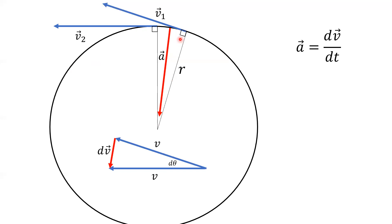For an object in circular motion, the velocity vector is always changing direction but maintains its tangency to the circle. The acceleration is always changing direction but always points towards the center. Keep in mind these statements are only applicable for uniform circular motion. Later we'll see that if you're moving in a circle and speeding up, the acceleration vector would not actually point towards the center — we'll look at that exception later.